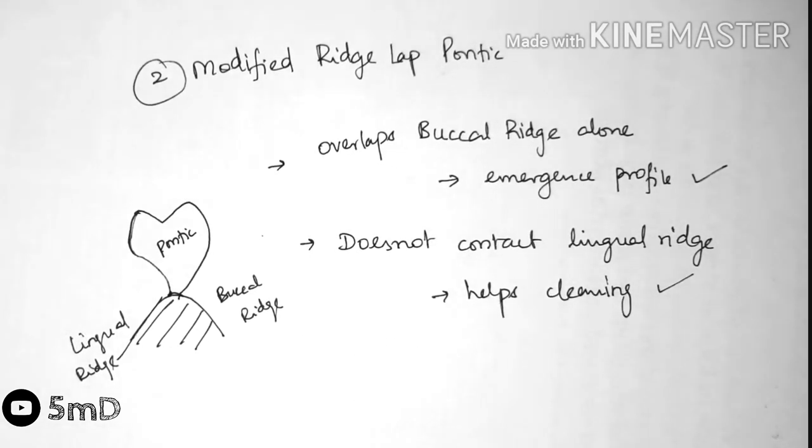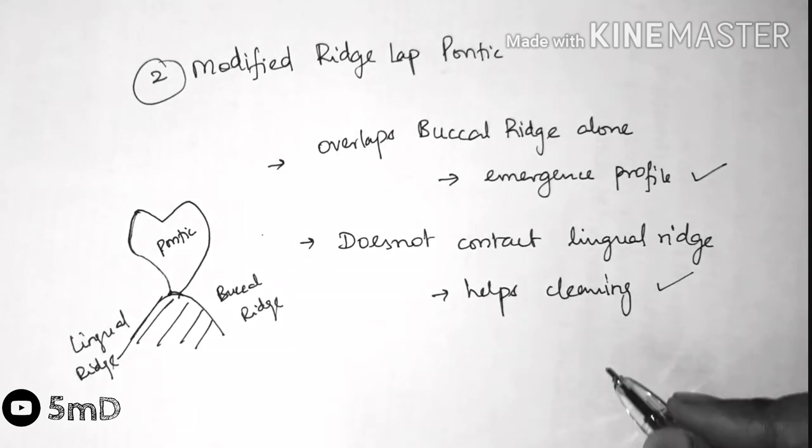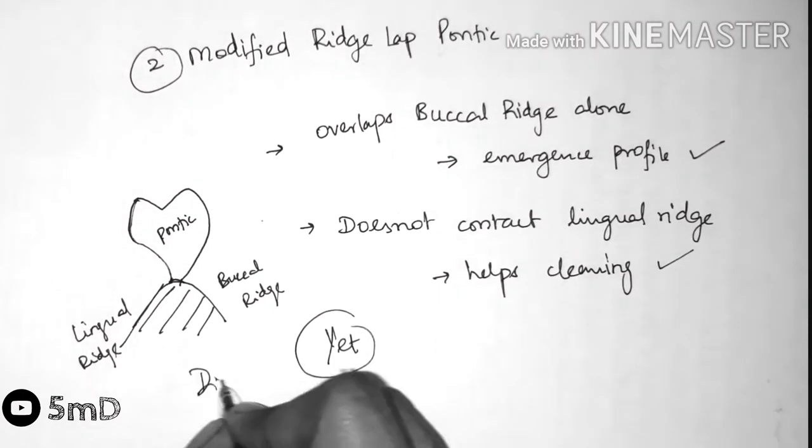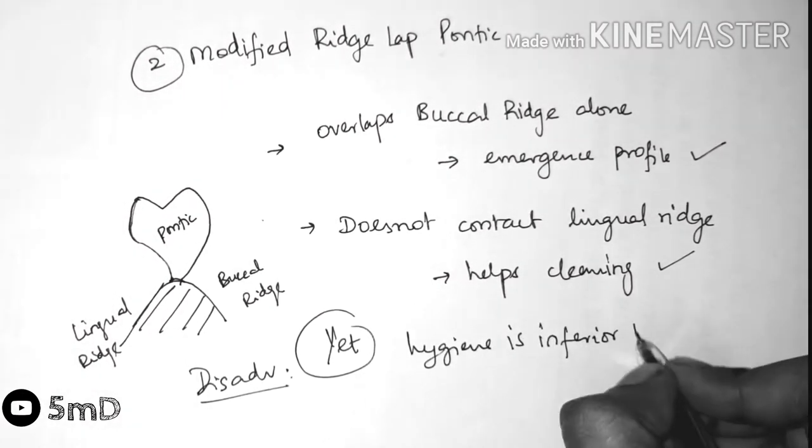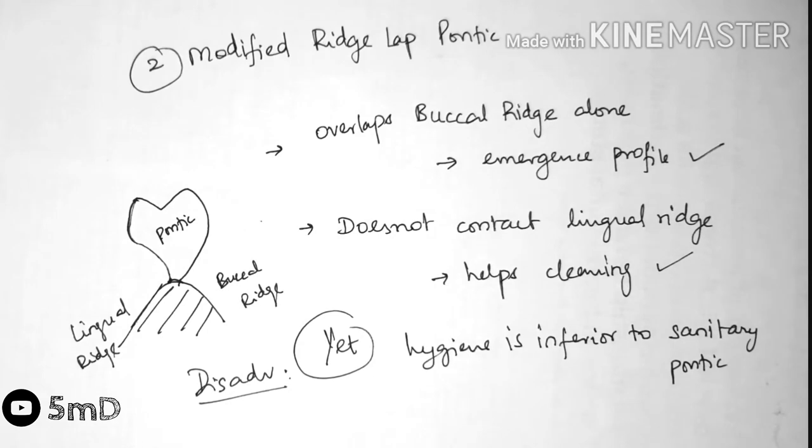To enable this cleaning capacity, it should be mostly convex in shape and the greater the convexity, it is easier to clean. It resembles the letter T when viewed from the gingival aspect. Yet the disadvantage is that it is not as hygienic as the sanitary pontic.